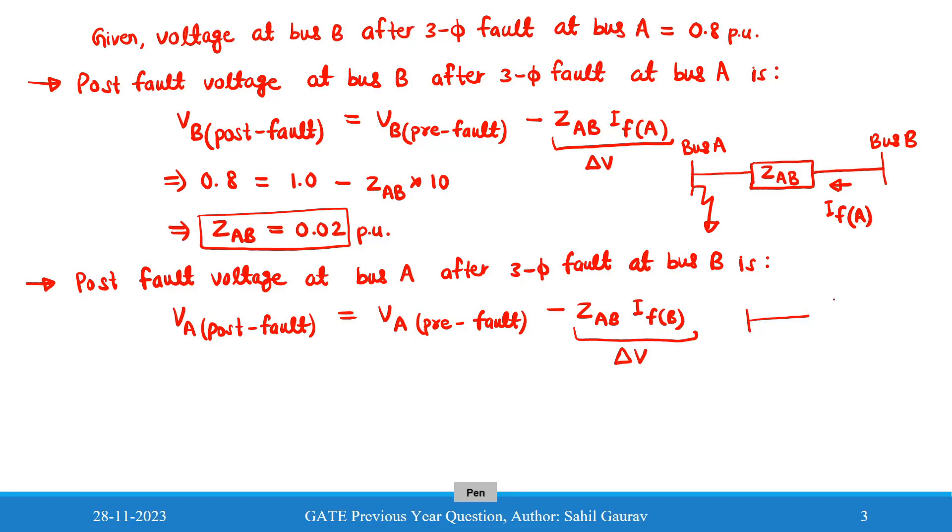This is bus A, bus B. Now in this case fault is happening at bus B, so this current is flowing like this way, I_fB. So just apply KVL then you will get the post-fault voltage at bus A.